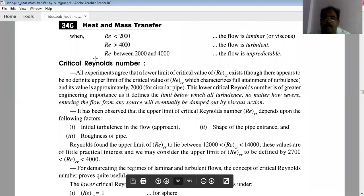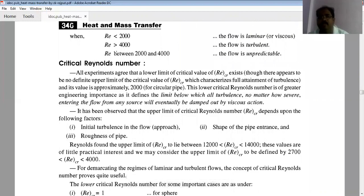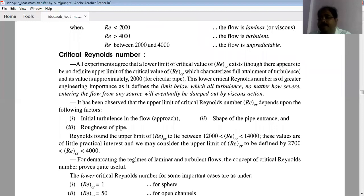In conclusion, if Reynolds number is less than 2000, it is laminar flow. If it is greater than 4000, it is turbulent flow. Between 2000 and 4000, it is unpredictable—it may be laminar or turbulent.